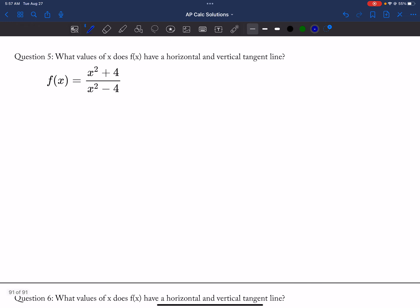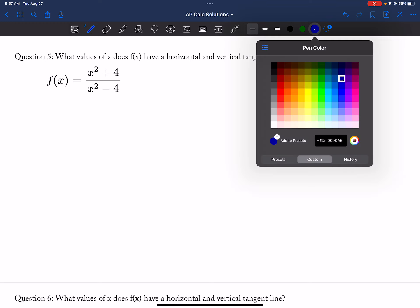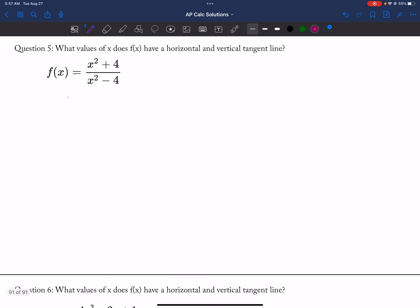And then my last one, horizontal tangent. So f prime of x, x squared minus 4 times 2x minus x squared plus 4 times 2x all over x squared minus 4, the quantity squared.